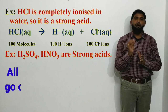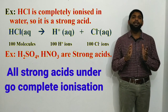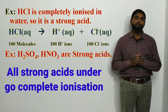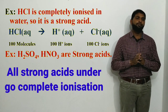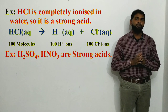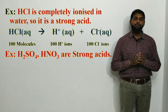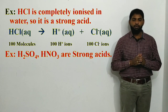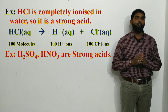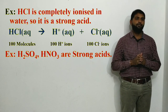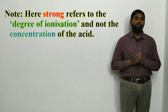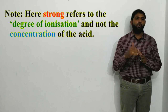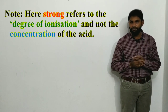All strong acids undergo complete 100% ionization. Examples include H2SO4 (sulfuric acid) and HNO3 (nitric acid) — these are strong acids because they undergo complete ionization in water. Note: 'strong' here refers to the degree of ionization, not the concentration of the acid.